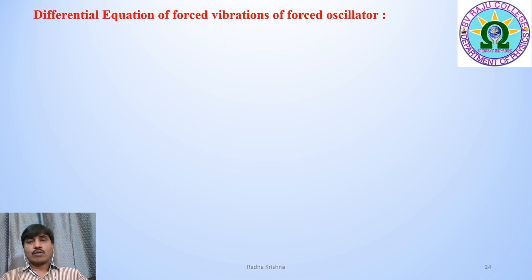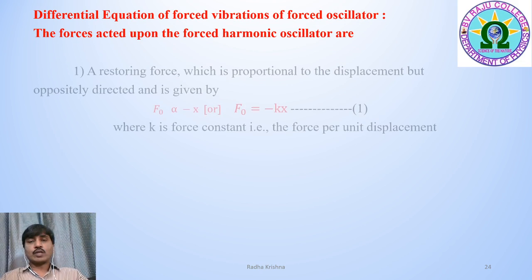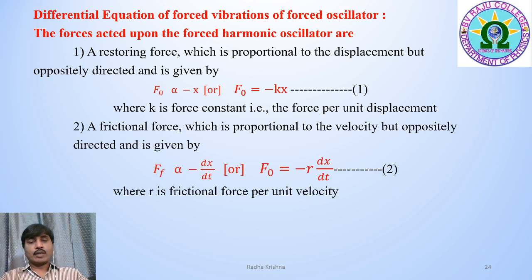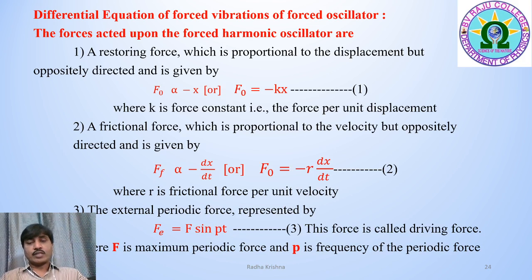Now, the differential equation of forced vibrations of a forced oscillator. The forces acting on the forced harmonic oscillator are: first, a restoring force proportional to displacement but oppositely directed, given by F₀ = −kx, where k is the force constant (force per unit displacement); second, a frictional force proportional to velocity but oppositely directed, given by F_f = −r(dx/dt), where r is the frictional force per unit velocity; and third, an external periodic force F_e = F sin(pt), where F is the maximum periodic force and p is the frequency of the periodic force.